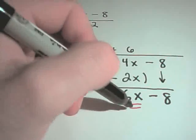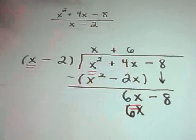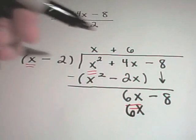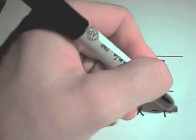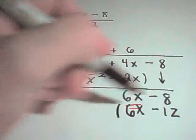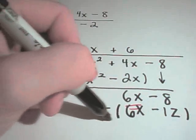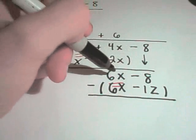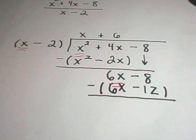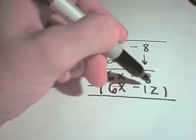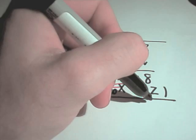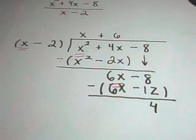So positive 6 times x is 6x. 6 times negative 2 is negative 12. Again, I put this in parentheses and subtract it. So I'll get 6x minus 6x, which is no x. I'll get negative 8 minus negative 12, so that's negative 8 plus 12. Negative 8 plus 12 is simply 4.